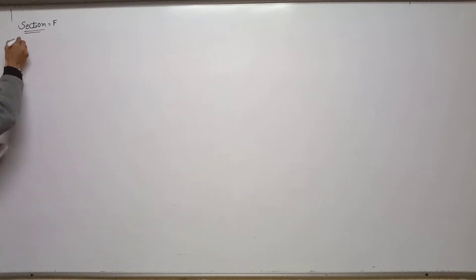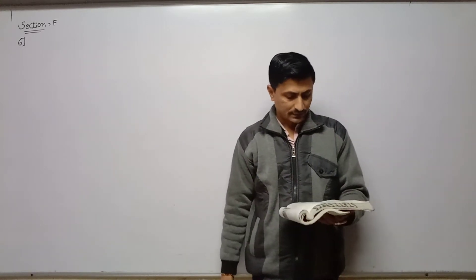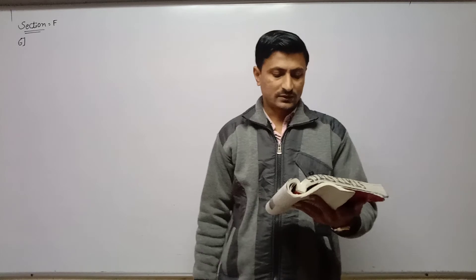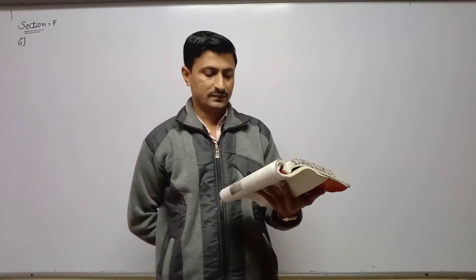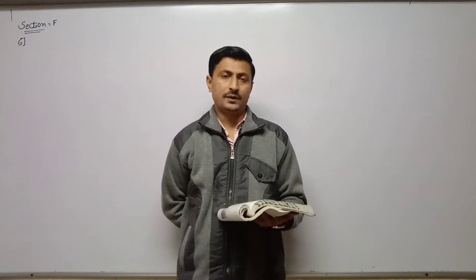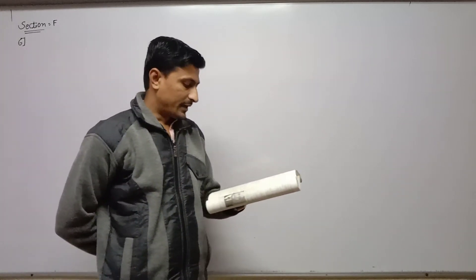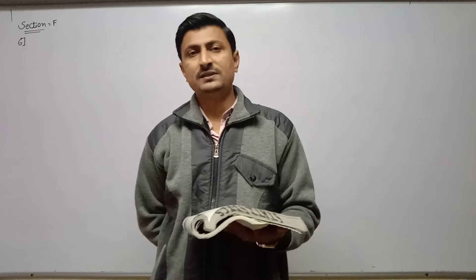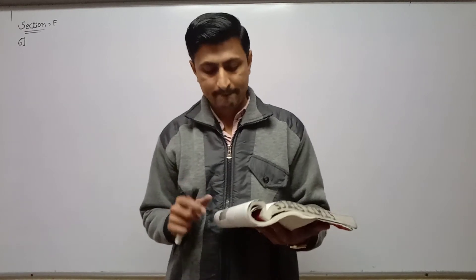Now question number 6. A sample of 50 screws was taken from lots produced at a factory to measure the diameter of the head of each screw. Its frequency distribution is given. Find Bowley's coefficient of skewness and interpret it. The diameter classes are 4 to 4.1, 4.1 to 4.2, etc. — this is cumulative frequency distribution, so first find original frequency.